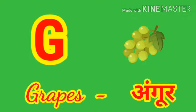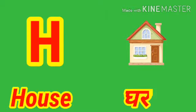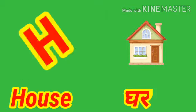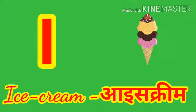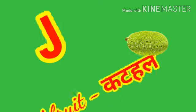G for grapes, grapes means angoor. H for house, house means ghar. I for ice cream, ice cream means ice cream. J for jackfruit, jackfruit means kathal.